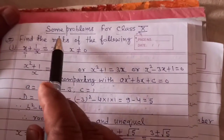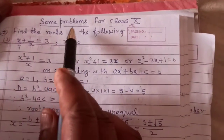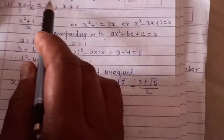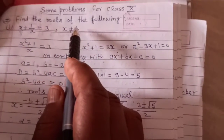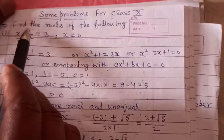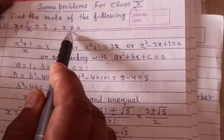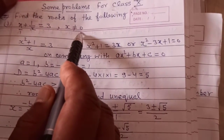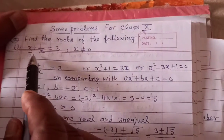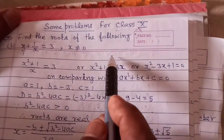Here I am going to solve some problems given in your textbook. Look carefully. Here is a problem: x plus 1 upon x equal to 3, and x is not equal to 0. We will solve this problem and find the value of x.